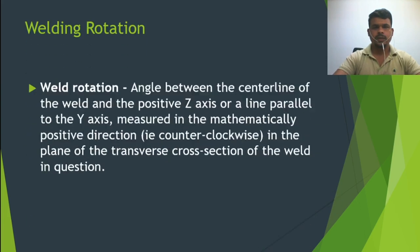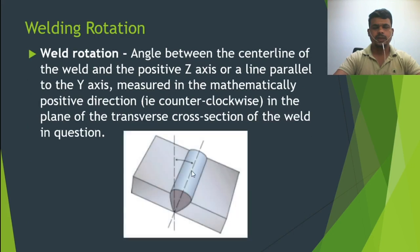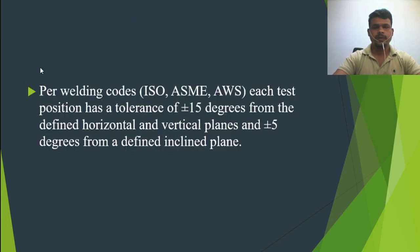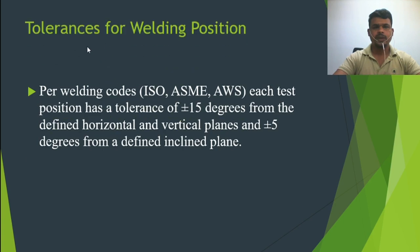Another concept is weld rotation. The weld center is here — weld rotation is how much it can be rotated. It is defined as the angle between the centerline of the weld and the positive z-axis, or a line parallel to the y-axis, measured in the mathematically positive direction counterclockwise in the plane of the transverse cross section of the weld. For reference, I have attached a photo showing tolerance for weld position.